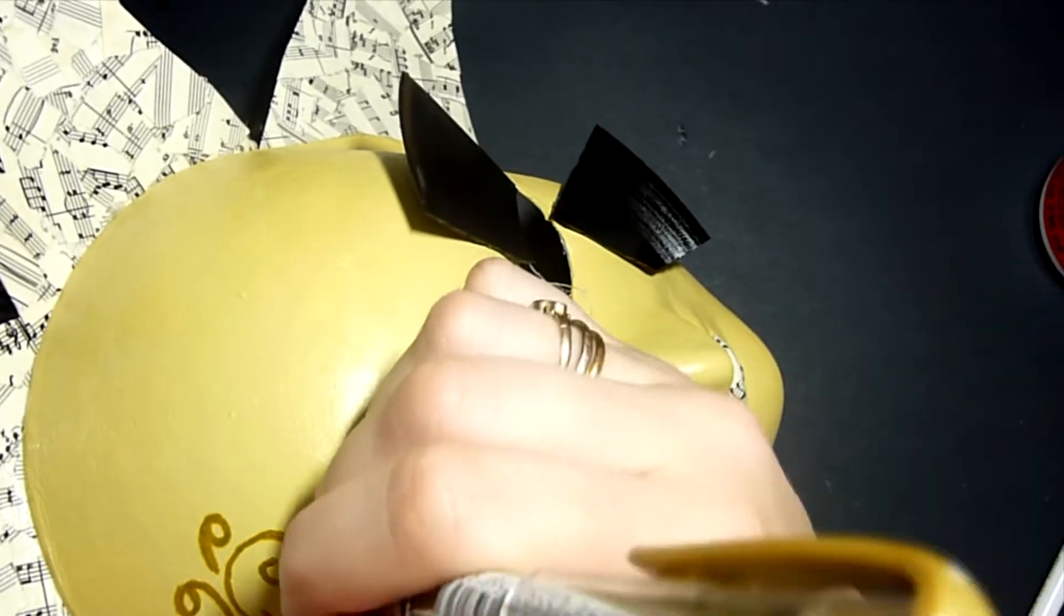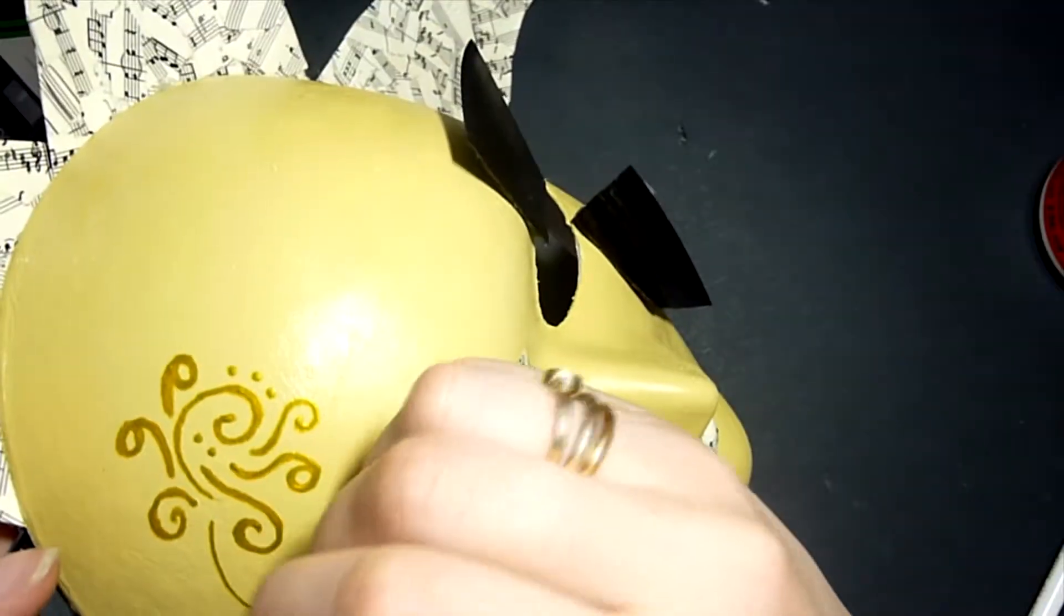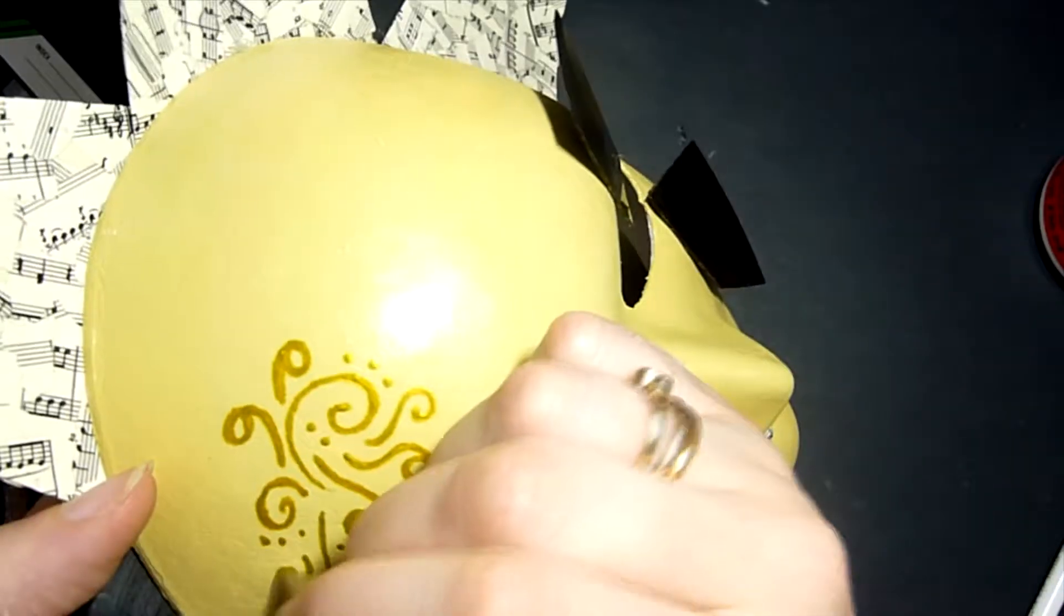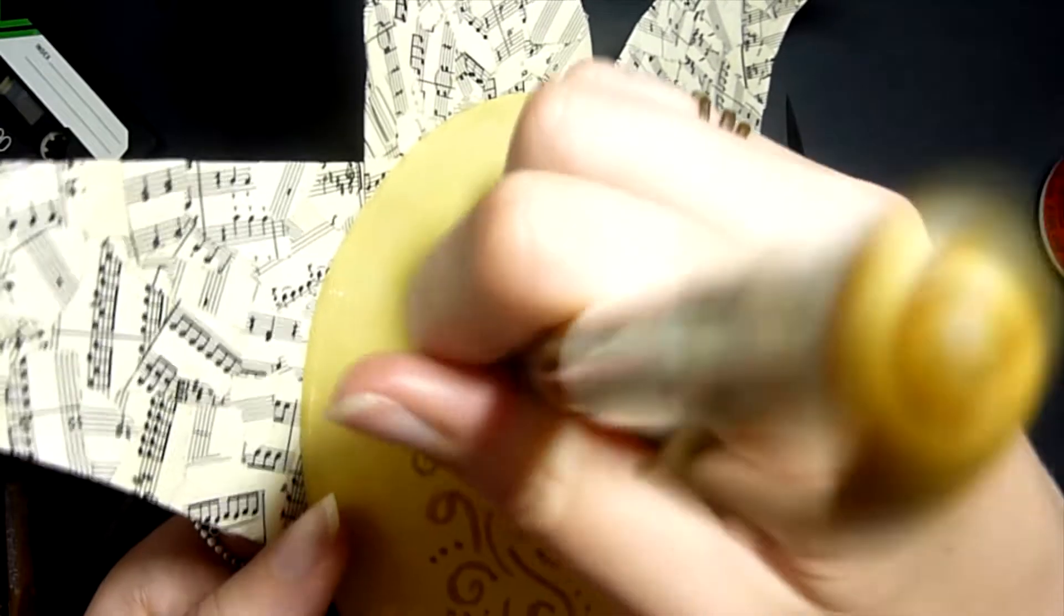I also used some ribbon around the top a bit later on. I glued that on with glue gun as well, and that was just to kind of neaten up where the mask joins the horns and the record.